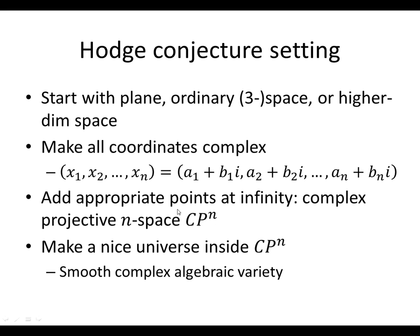If we only ever did that and made that our universe, it'd actually be pretty simple, because that's just sort of one universe to live in. What we do then is make a nice universe sitting inside CP^N — a smaller universe. You might want to think of a sphere sitting inside three dimensions, or like the surface of the Earth. Practically, for our lives on Earth, we can't go out into outer space or go deep into the Earth — we kind of live on a two-dimensional surface inside three-dimensional space. That's the kind of thing you want to picture.